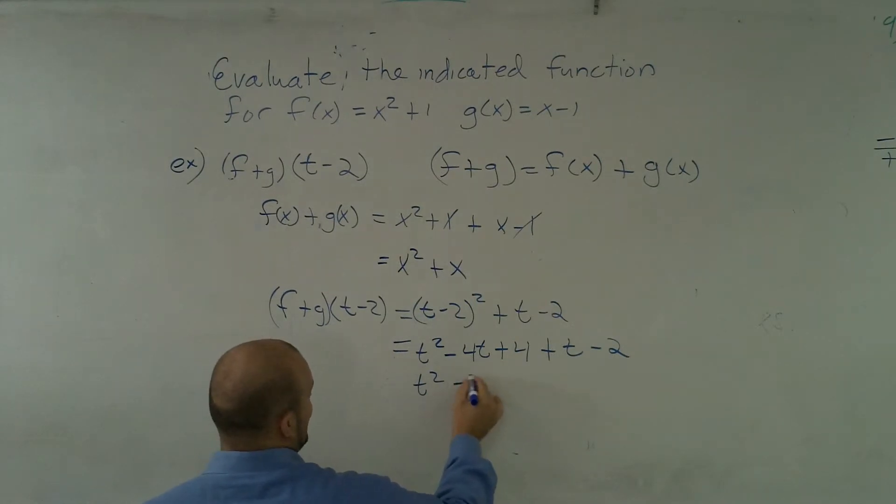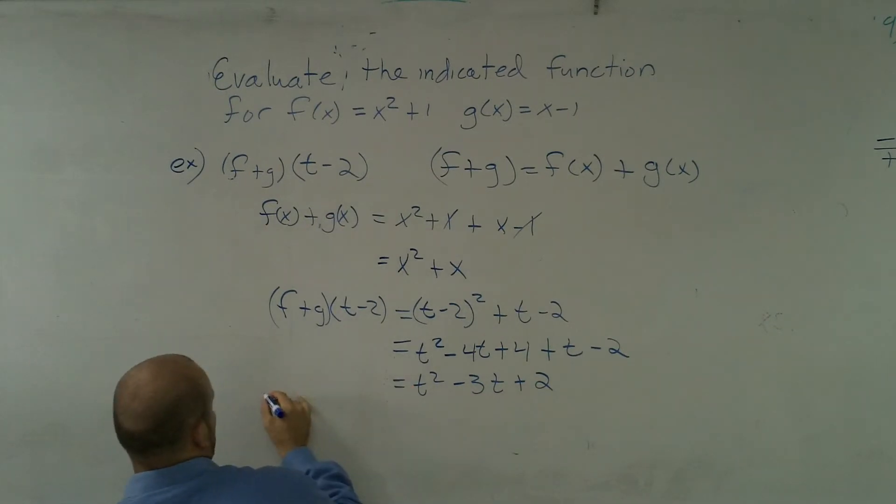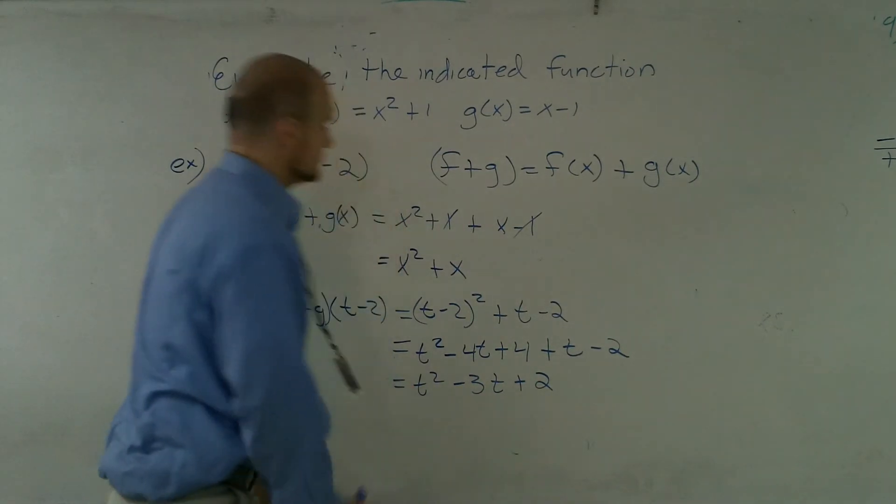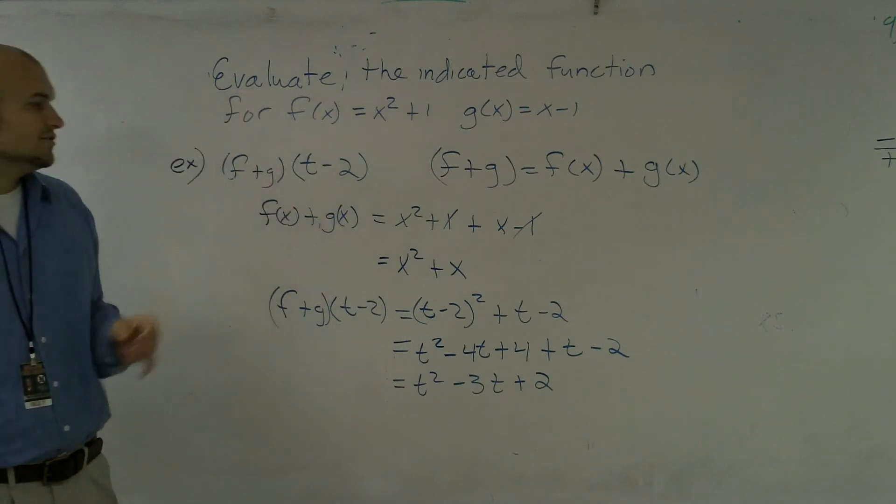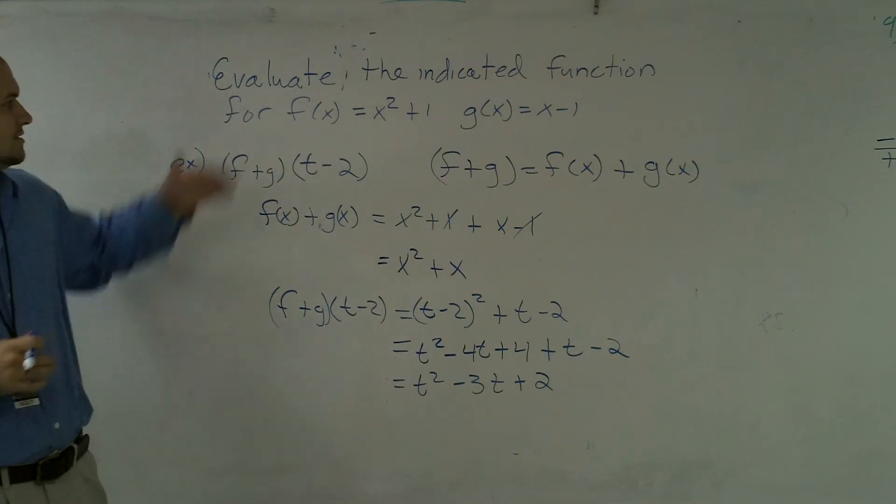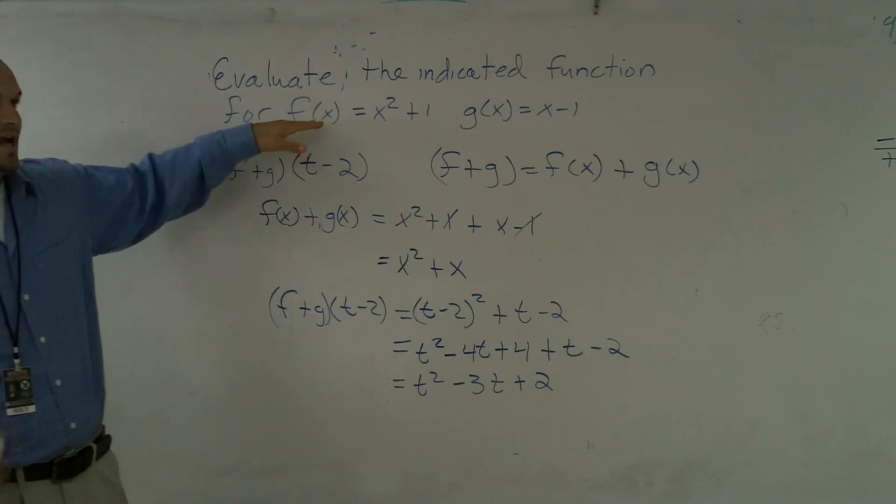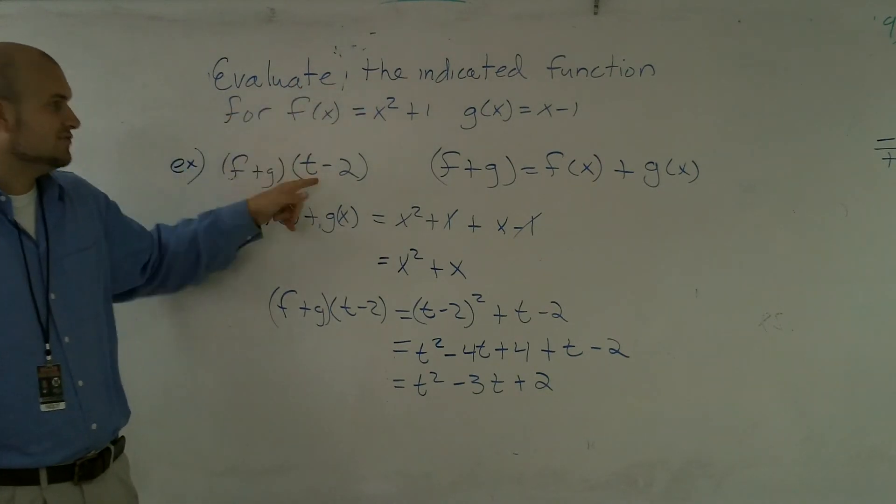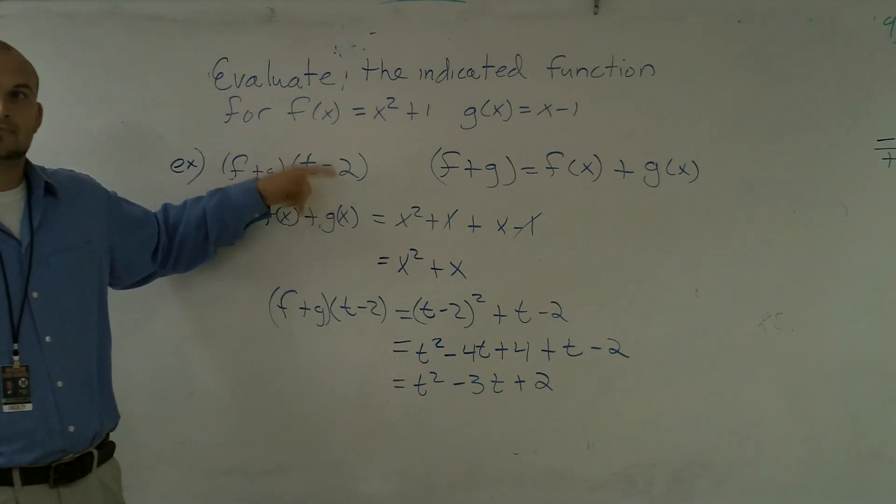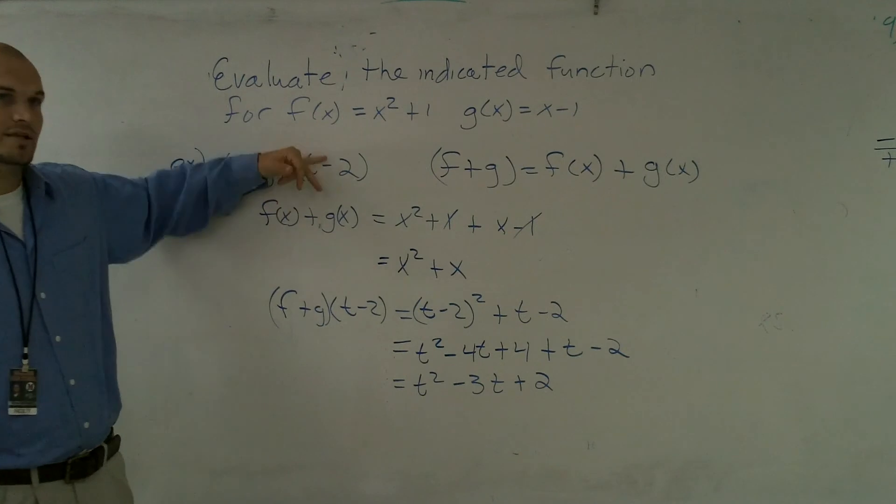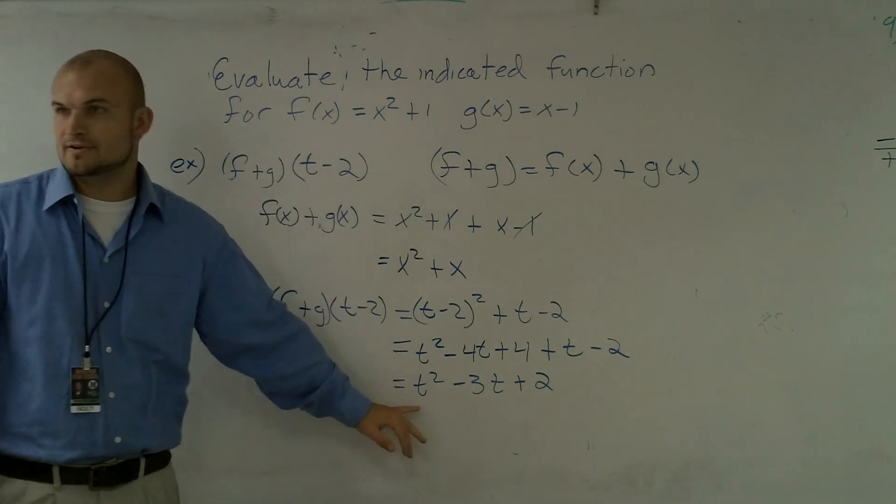t² - 3t + 2. And that is how you evaluate the indicated function for when you're adding an f(x) and a g(x). You add them and then you evaluate for your term given. And since this term has a variable that you're evaluating for, your final answer will have a variable in it.